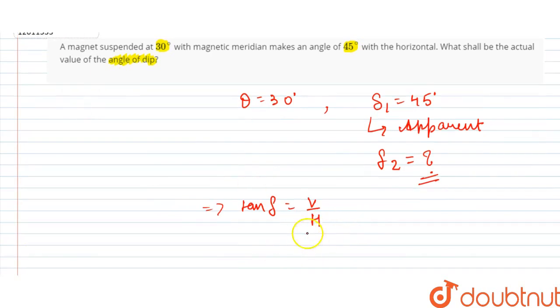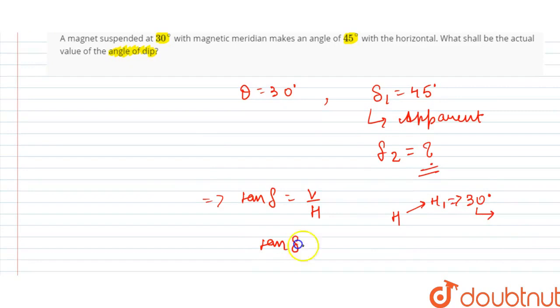So we assume that the component h1 is 30 degrees inclined with magnetic meridian. So we can see tan delta 1 value will simply come as V by h1. Where h1 value will be H cos 30.